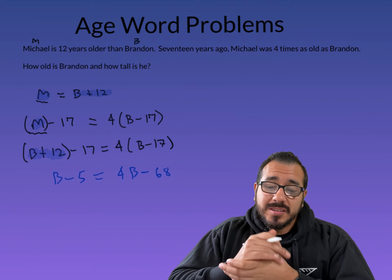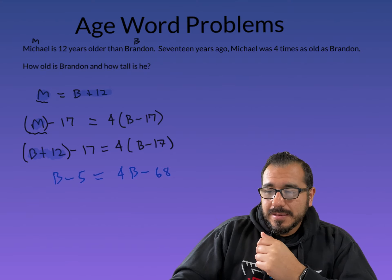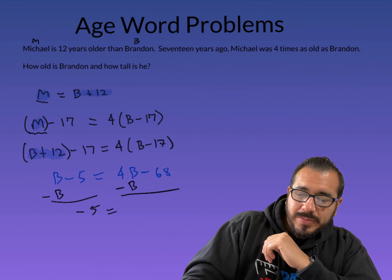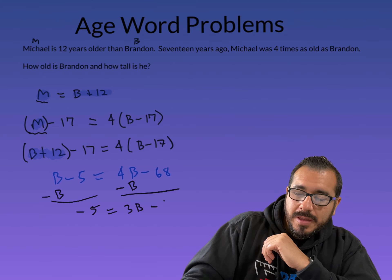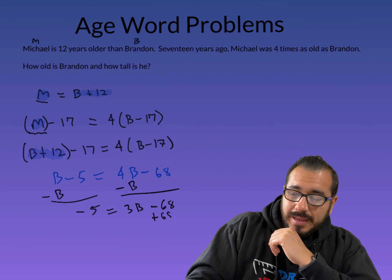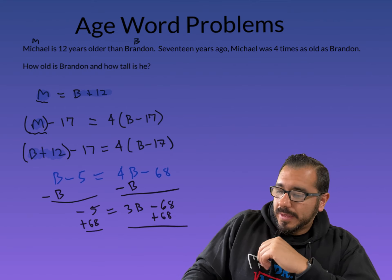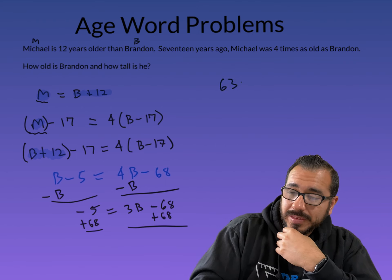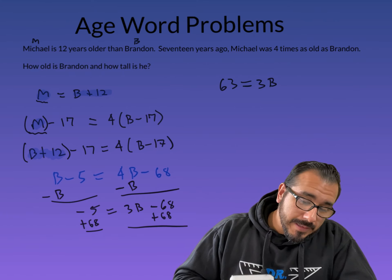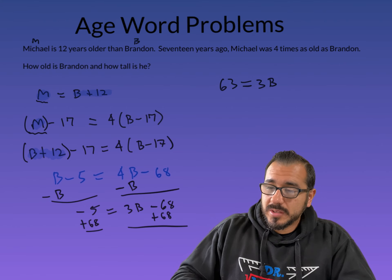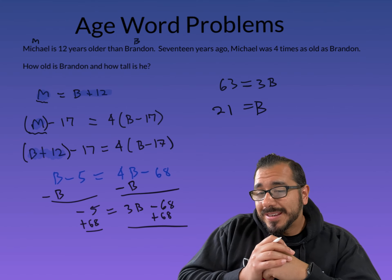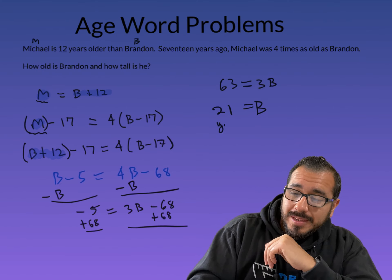Now move the B terms — it doesn't matter which side. I'll subtract 1B from both sides, leaving −5 = 3B − 68. Then add 68 to both sides: 63 = 3B. Divide both sides by 3: B = 21. To verify, let's just double-check so we don't make any silly mistakes. So Brandon is 21 years old.